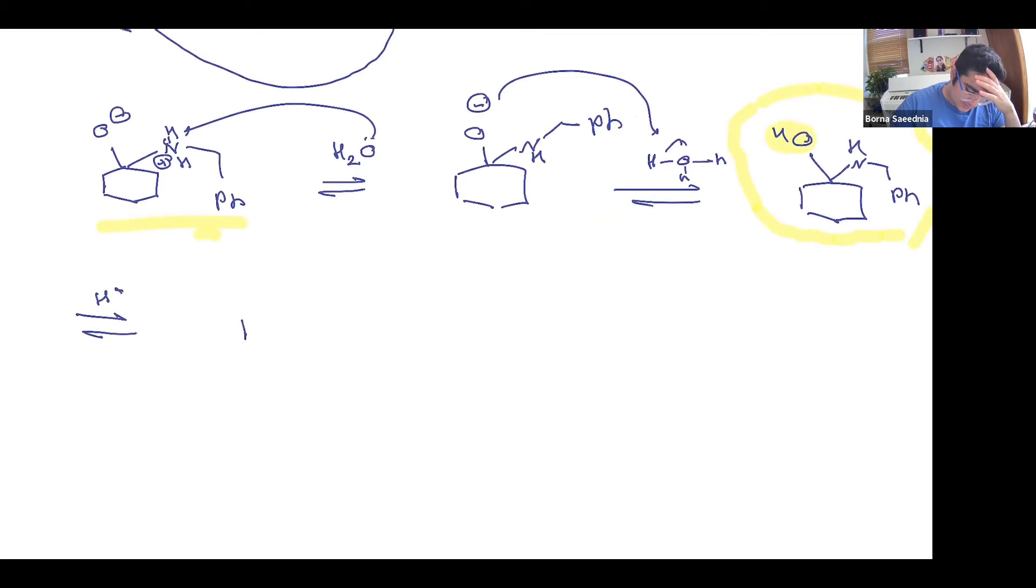In order for you to be able to lose water, what actually needs to happen is that you need to convert that OH group into a good leaving group, which will then lose water and form the amine.